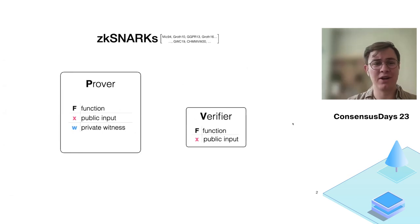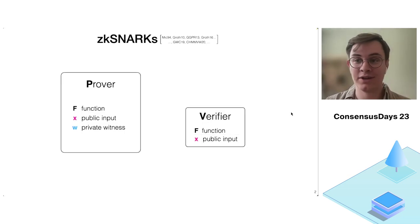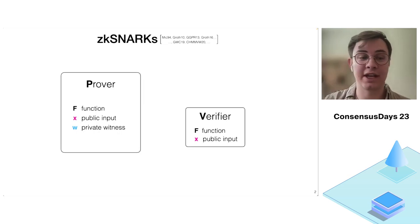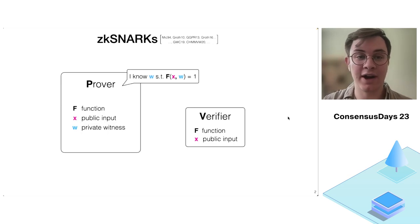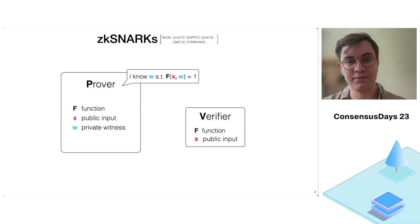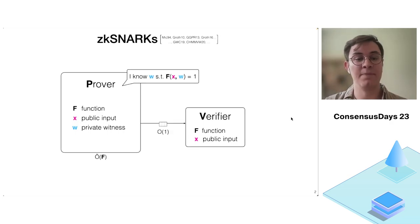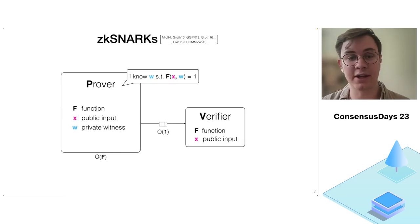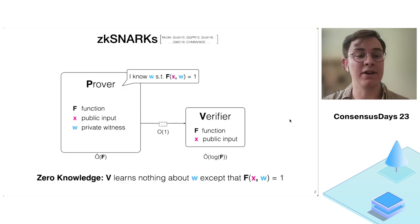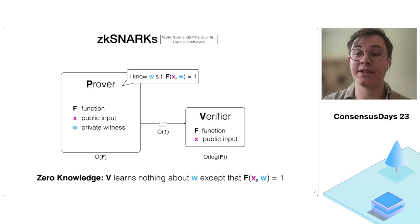To give some background, ZK-SNARKs are a cryptographic tool which allow a prover to convince a verifier of some statement. In more detail, if we have some function f, a public input x, and the prover additionally has some private witness w, they want to convince the verifier that f evaluated on x and w equals 1. The prover should run in time linear in the size of the function, the proof size should be sublinear or constant, and the verifier should run in sublinear time — say log of f. The ZK stands for zero knowledge, meaning the verifier should learn nothing about the private witness, except that this condition holds true.